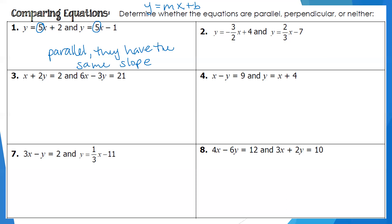In number two, y equals negative three-halves x plus 4, and y equals two-thirds x minus 2. The slope of the first equation is negative three-halves, and the second is two-thirds. These are not the same, so they're not parallel. Are they opposite reciprocals? One is negative and one is positive, and flipping three-halves gives two-thirds. They are opposite reciprocals, so these two lines are perpendicular.